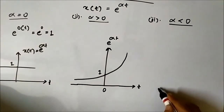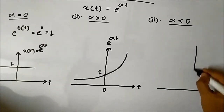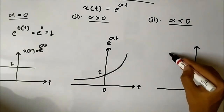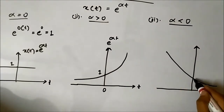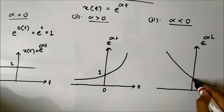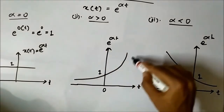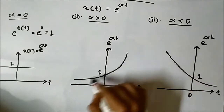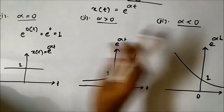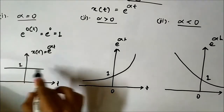For alpha lesser than zero, it will be the opposite — it will be an exponentially decreasing signal, with decreasing amplitude over time. For alpha equal to zero it remains a signal of constant amplitude equal to one.